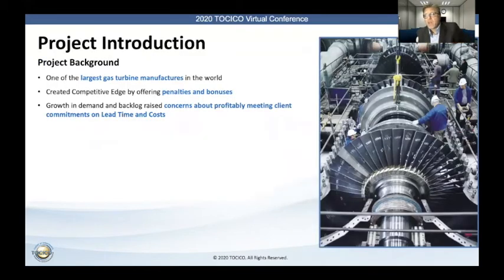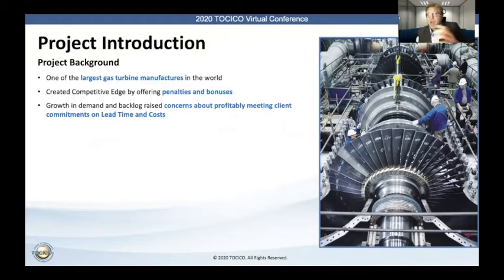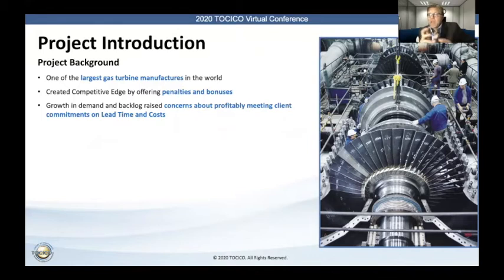So let's go back to the case study that was the objective for this presentation. A couple of years back through one of our partners, we were approached by one of the largest gas turbine manufacturers in the world. They said they had created a competitive advantage by offering penalties and bonuses. They had a fantastic pipeline of programs to be delivered — about a five-year pipeline — and they expected just over $120 million of profits from this. But they were about a year into this and had some concerns: there were already some delays and rework that had to be done, and they were worried about whether this would require them to change their commitments on either lead time or cost to their customers.